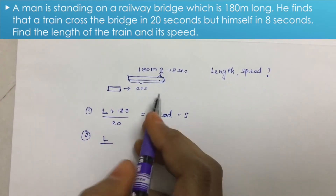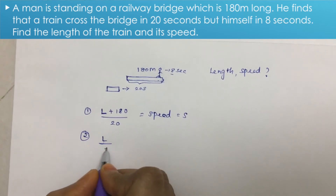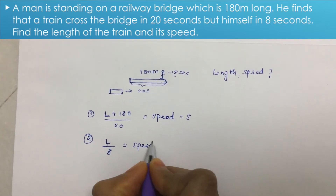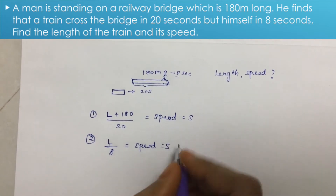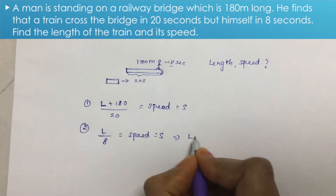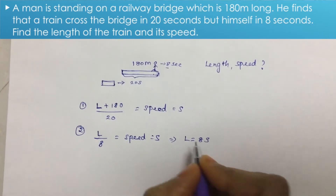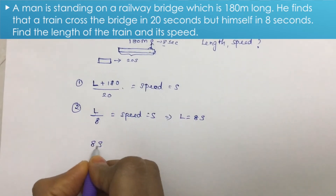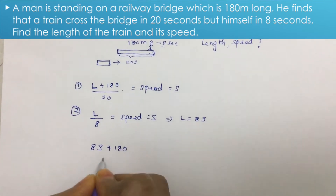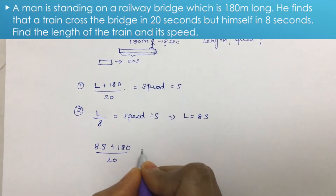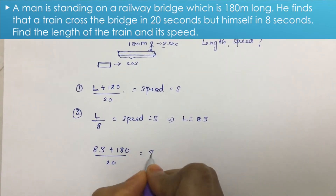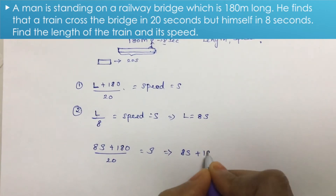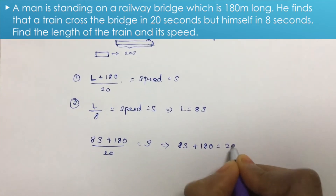From the second scenario: L divided by 8 equals S, so L equals 8S. Substituting into the first equation: distance is L plus 180, time is 20 seconds, so (L + 180) / 20 = S. This gives us 8S plus 180 divided by 20 equals S, which implies 8S plus 180 equals 20S.